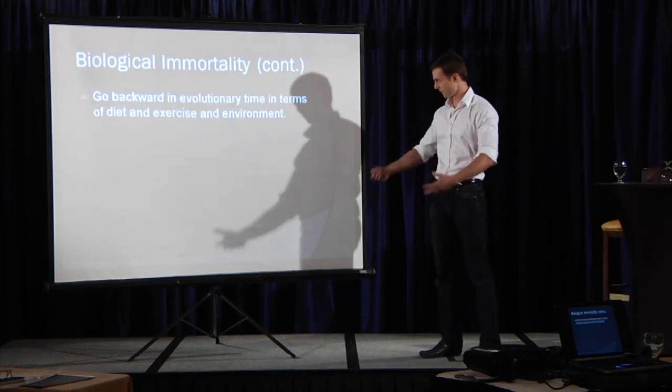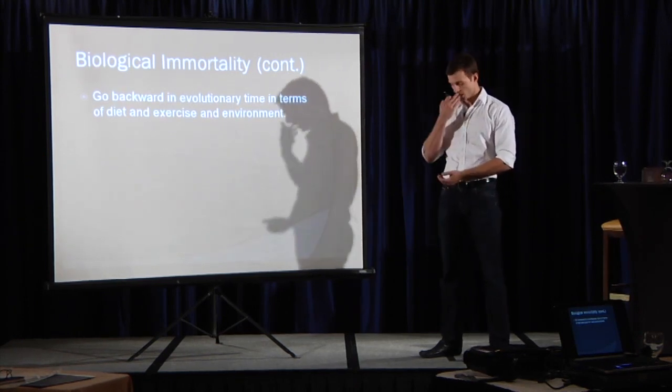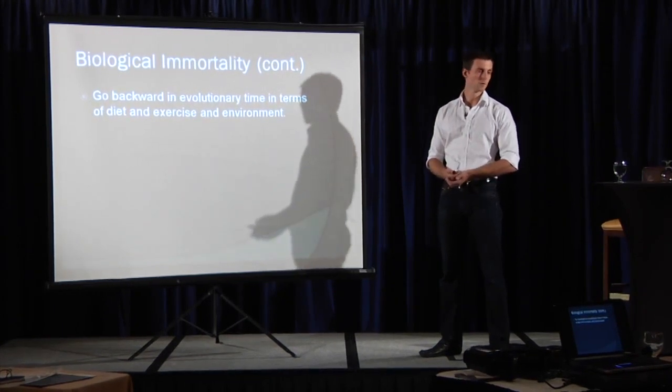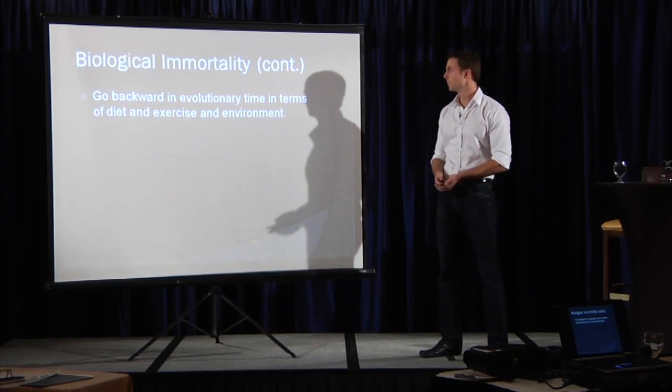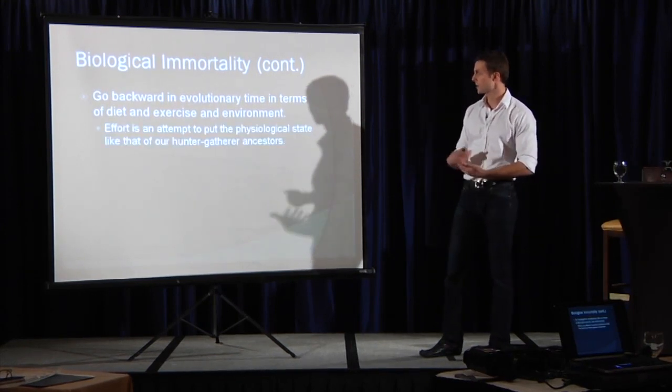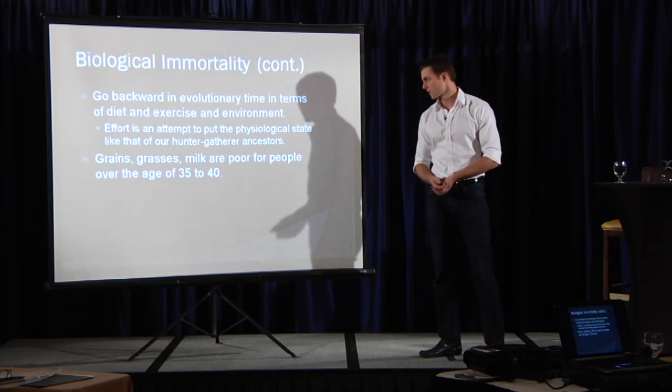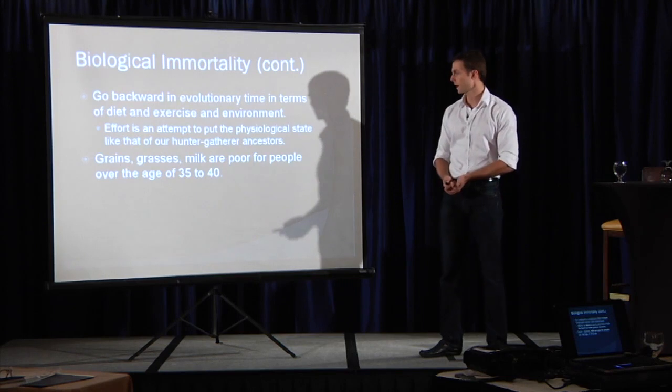So if you can go backwards in terms of evolutionary time, diet, and environment, you're doing better off here. This doesn't mean hitting your wife or girlfriend over the head with a club, dragging them by their hair, that type of stuff. We're talking diet. We're trying to mimic a physiological state like that of our hunter-gatherer ancestors. So you're talking about these are very poor over the age of 35: grains, grasses, milk.